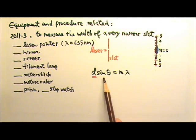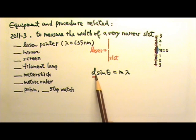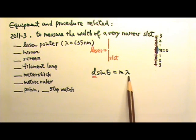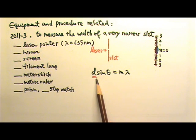We can use D sin θ equals M λ, and this D is the width of the slit, the one we're looking for. So we just have to have θ, M, and λ to plug in, and we can calculate for the slit width D.